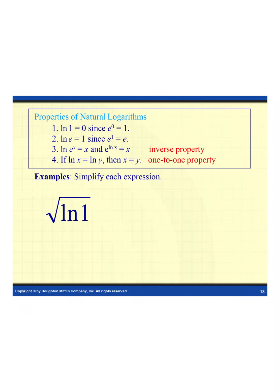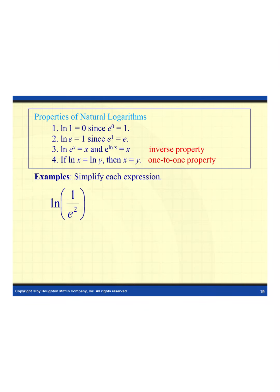Let's look at the examples. First, we have the square root of ln(1). Using property 1, ln(1) equals 0, so we have the square root of 0, which is just 0. For the next example, we have ln(1/e²). Rewriting with negative exponents, that's ln(e to the negative 2). Using the inverse property (property 3), the natural log of e cancels out, leaving the exponent: negative 2.